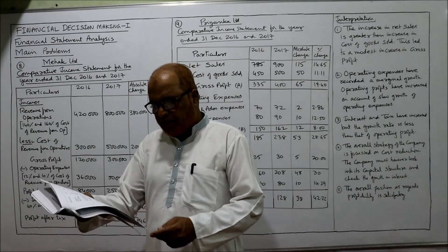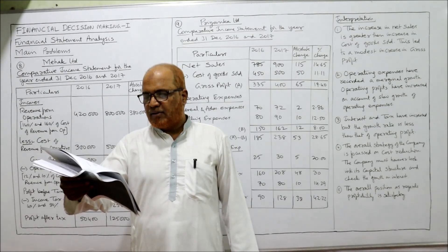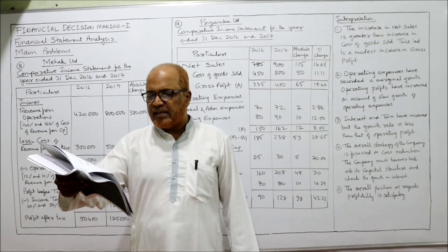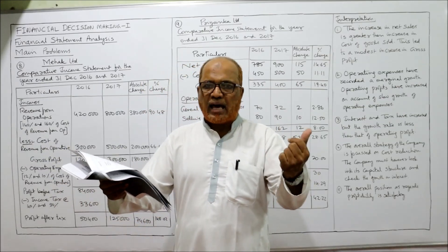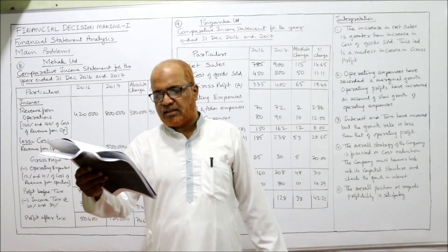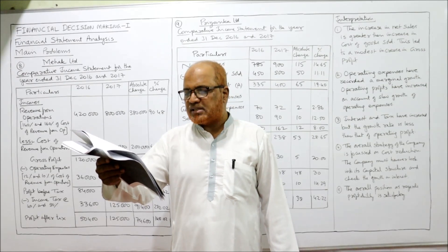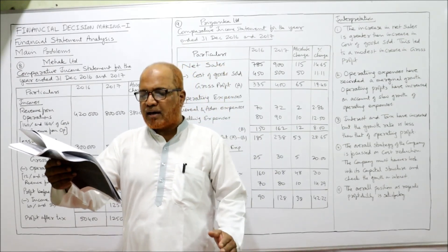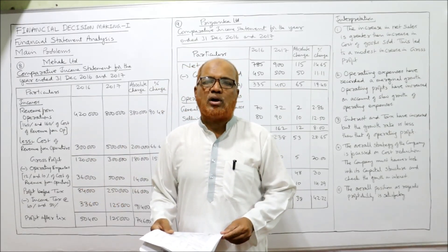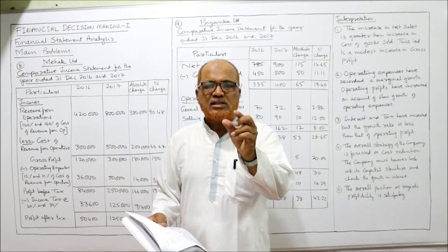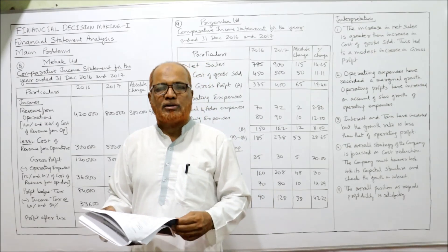Problem number eight: prepare a comparative income statement of Mehaka Limited from the following details for 31st December 2017 and 31st December 2016. Here 2016 is the last year and 2017 is the current year. Revenue from operations is given as 140% of cost of revenue from operations for last year, and 160% for the current year — so the amount is not directly given, we need to calculate it.